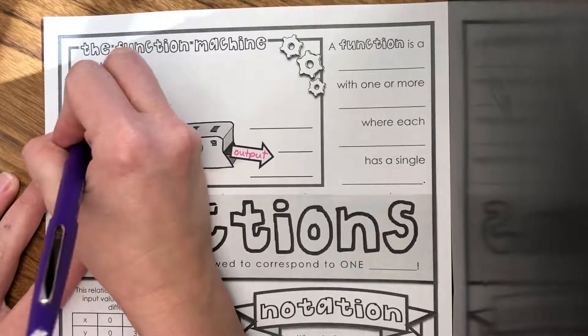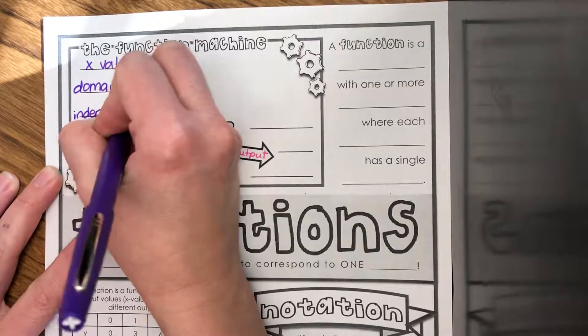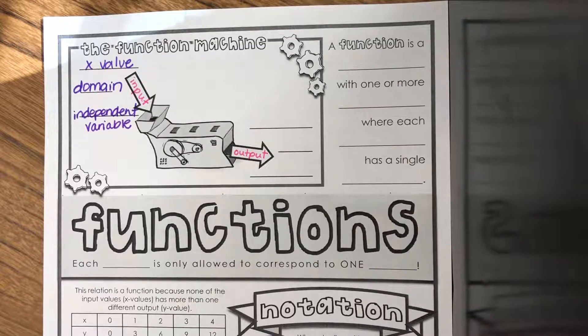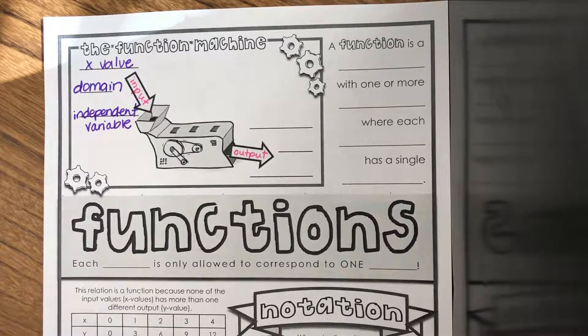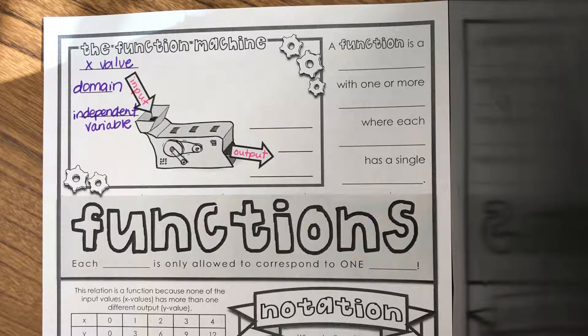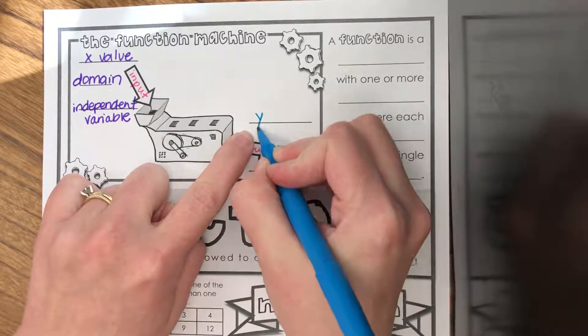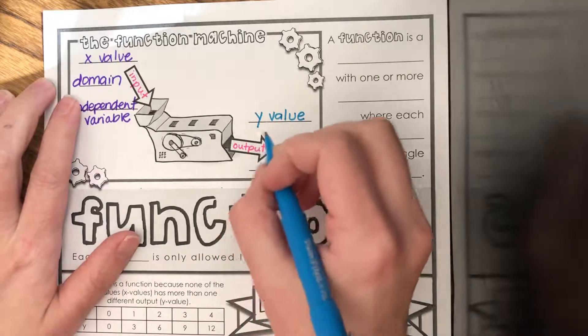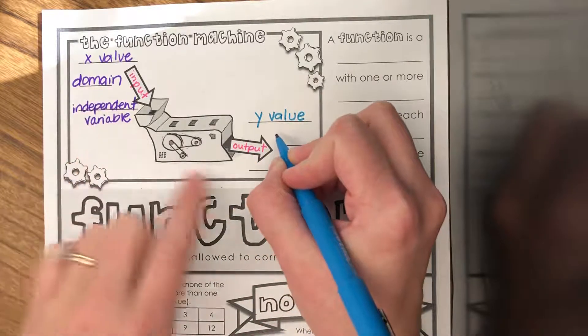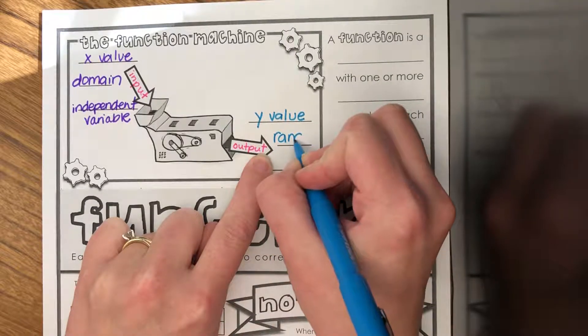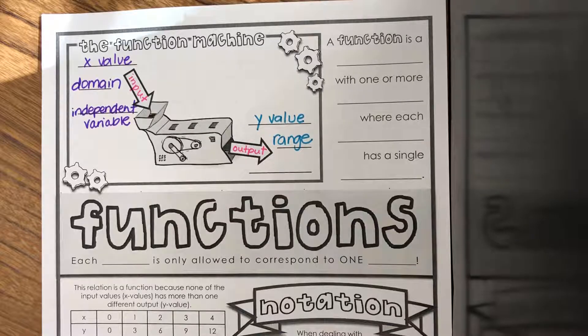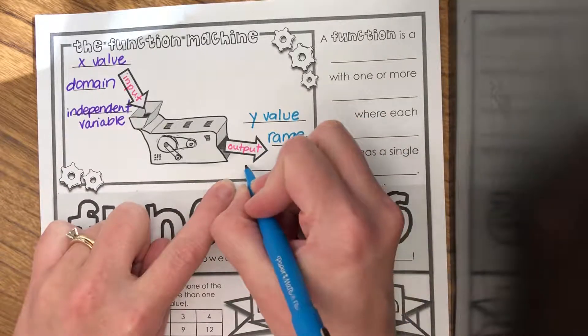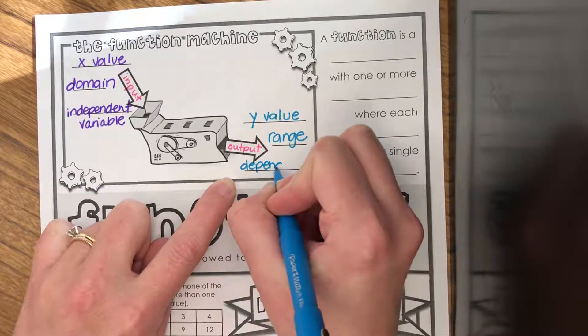The last one is independent variable. There are also three names for outputs. The X value for input corresponds to the Y value for output. The domain was the set of all inputs, the range is the set of all outputs. And if input is independent, output is going to be dependent.